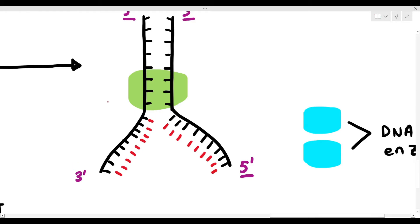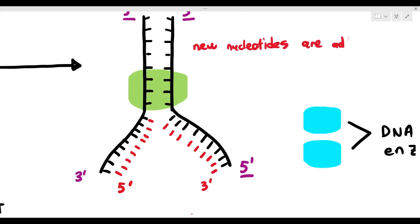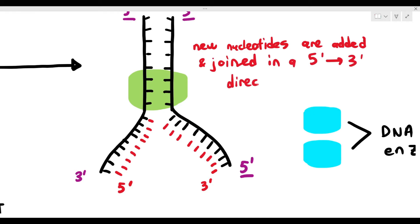If we zoom in, you must understand that on the new strand — I've labeled the new strand — it's going to be 5' on one side and 3' on the other side, because they act in anti-parallel with their template strands. They're always anti-parallel to their template strands. So if the template strand has a 3', the new strand has a 5' next to it, and if the template strand has a 5', the other side has a 3'.